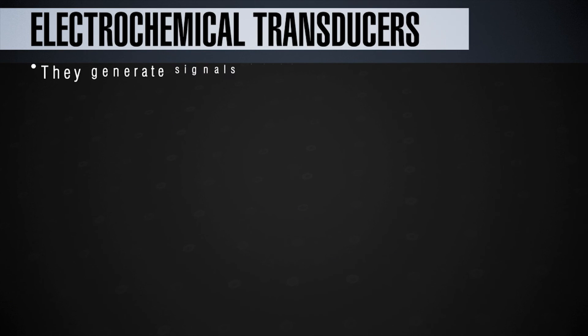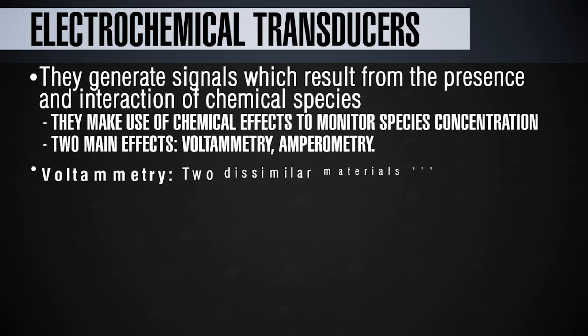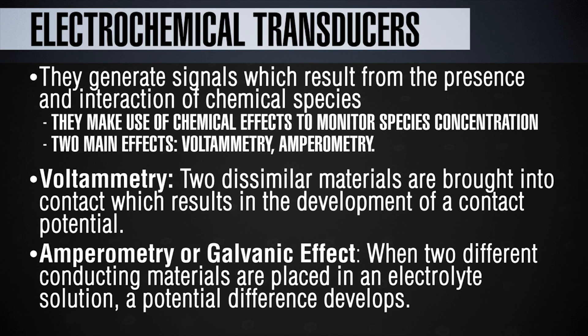Finally, the electrochemical transducer. These transducers generate signals from the presence and interaction of chemical species, making use of chemical effects to monitor the concentration of various species. There are two types: voltometry and amperometry. In voltometry, when you bring together two dissimilar materials, that results in the development of a contact potential. In the case of amperometry, also called the galvanic effect, you bring together two different conducting materials in an electrolyte solution and a potential difference will develop.